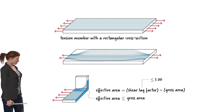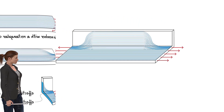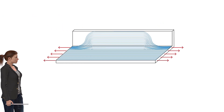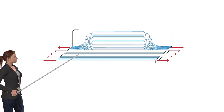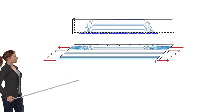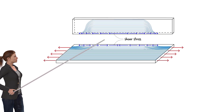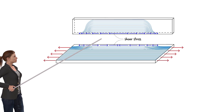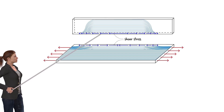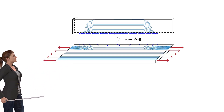Why do we call this partial stress distribution shear lag? The axial stress due to the applied force travels from one leg to the other leg of the angle in the form of shear stress, through the rectangular area that the two plates share. As the stress propagates from the central part of the member towards its ends, the shear stress falls behind in magnitude. We refer to this falling-behind phenomenon as shear lag.